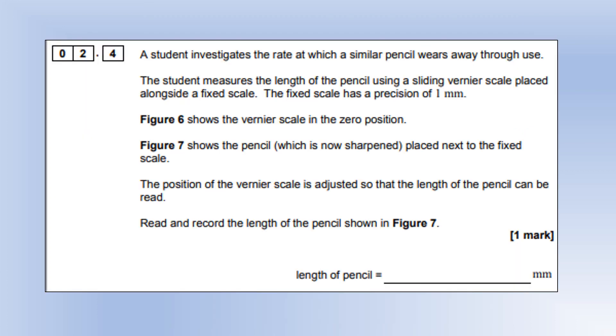A student investigates the rate at which a similar pencil wears away through use. The student measures the length of the pencil using a sliding vernier scale with a pencil placed alongside a fixed scale. The fixed scale has a precision of 1 millimeter. The first diagram shows it in the zero position.